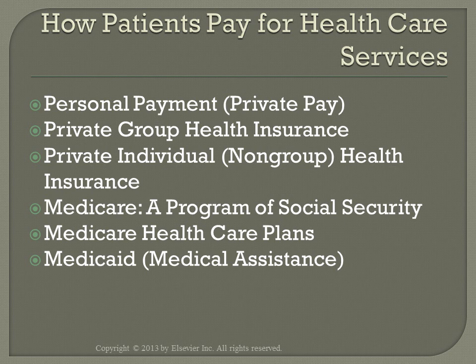Medicaid is medical assistance for eligible families and individuals with low incomes and resources. It is a cooperative venture between federal and state governments with broad national guidelines, but each state establishes its own program services and eligibility requirements. The Children's Health Insurance Program, or CHIP, covers uninsured children up to 200% of the poverty level. Medicaid assistance varies from state to state, and services do not cross state lines.